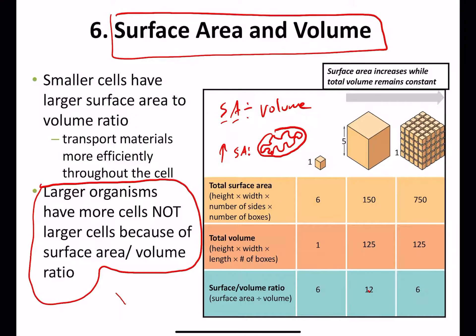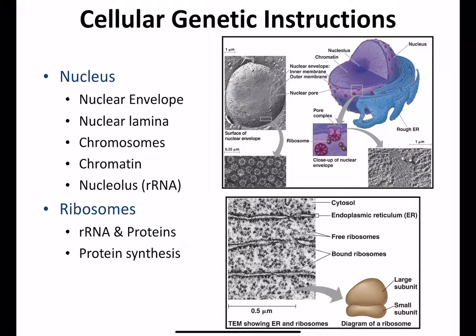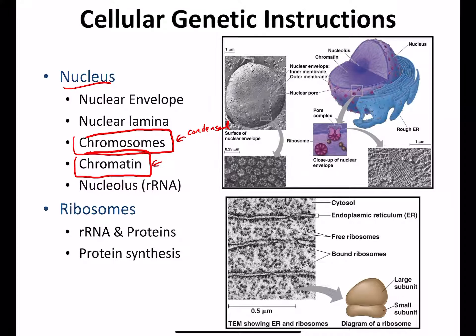Regarding the genetic material of a eukaryotic cell, you have the nucleus. Key definitions: chromosome structure versus chromatin — chromosome is when it's really condensed, and chromatin is when it's essentially loose. The nucleolus is where ribosomal RNA is made, which helps make up your ribosomes, and that's where protein synthesis occurs.